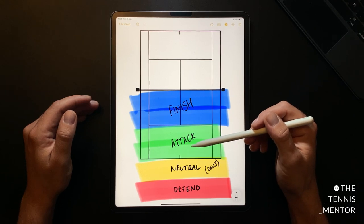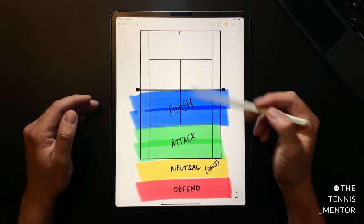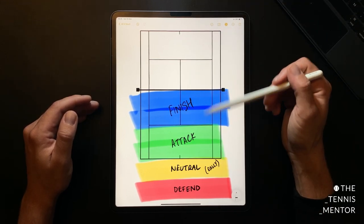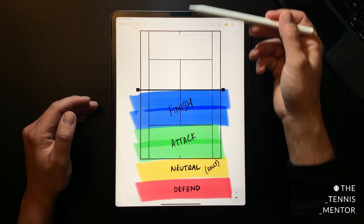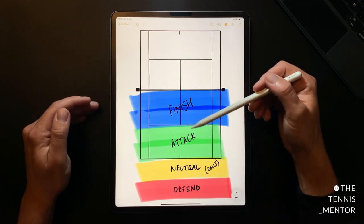When you think of these zones at your opponent's end you can see how by hitting the ball nice and deep you're going to force your opponent back into their red zone to defend. The more often you can keep them in their red zone you can move forwards into your neutral, attack and finishing zones.